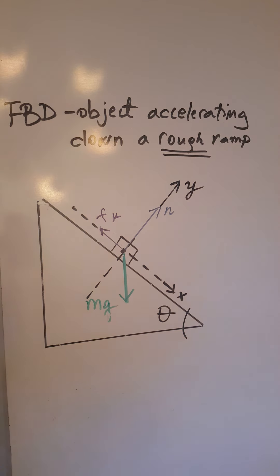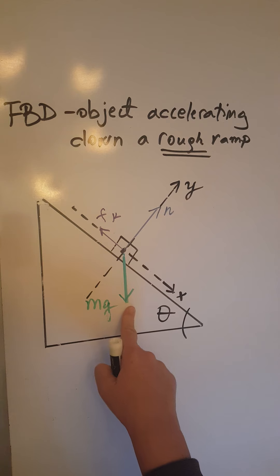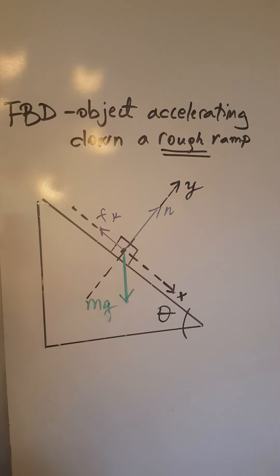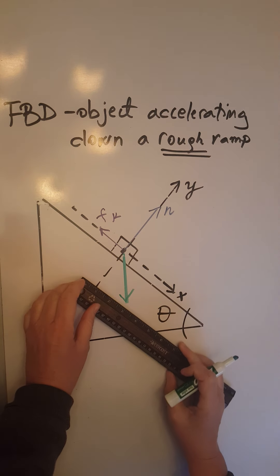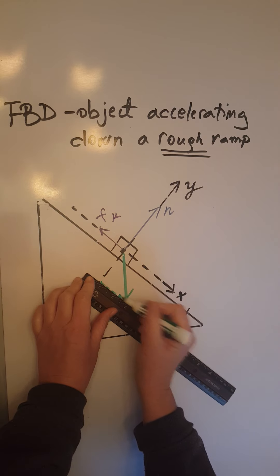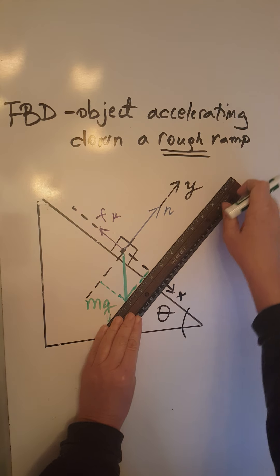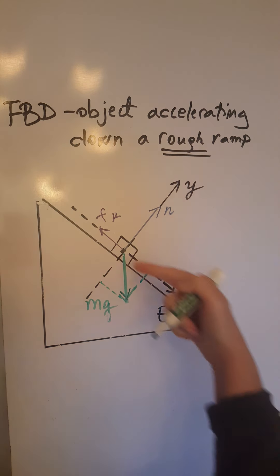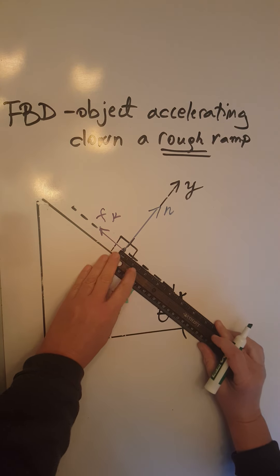Out of the three forces acting upon this object, only one force — mg — is neither along the x nor along the y. So mg will have to be resolved. We resolve this vector by drawing perpendiculars from its arrow to the y-axis and to the x-axis, creating two small right triangles.